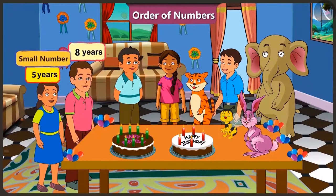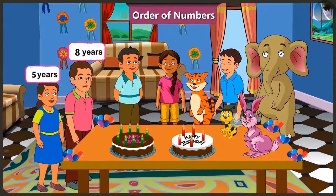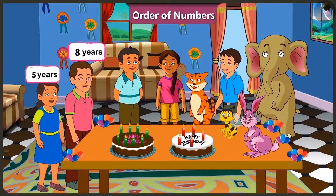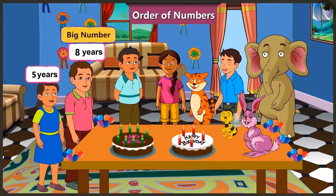Number 5 is smaller than number 8. While counting, we always count from smaller number to bigger number. Counting on this basis, can you tell me which number comes first — 5 or 8? 5 comes first in counting. Absolutely correct. While counting, 5 comes first, then 6, 7, 8. This shows that 8 is a bigger number because it comes after 5.